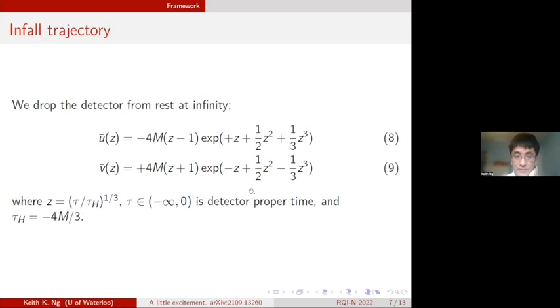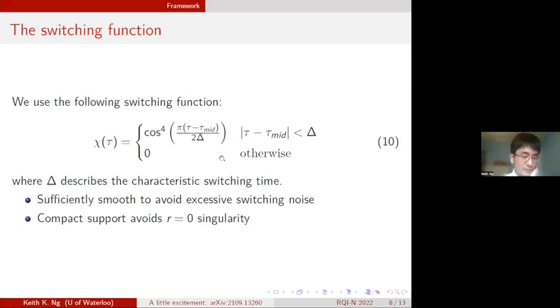A small technical detail but an important one: we use a cosine-fourth switching function. It has a couple benefits. It's sufficiently smooth to avoid excessive switching noise, and it's also compactly supported because we don't want to deal with what happens at the singularity. Our detector should be done detecting by then.